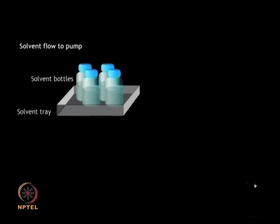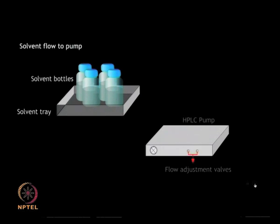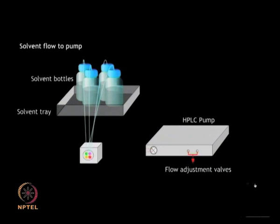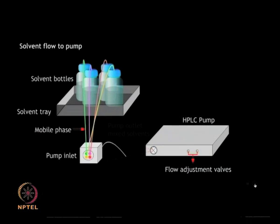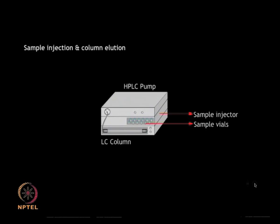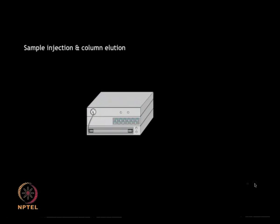A typical liquid chromatography setup consists of solvent bottles, degasifier, dual or binary pumps, sample injector, column, and detectors. Here you can see the various components involved in performing liquid chromatography. Different solvents can be placed in the solvent bottles depending upon the purification requirements. The solvents are mixed in the desired ratio and pumped into the column during elution, after removal of any trapped air by means of the degasifier.